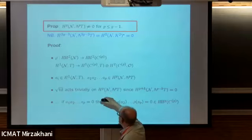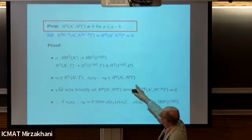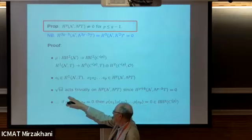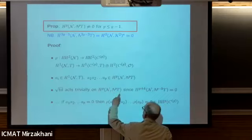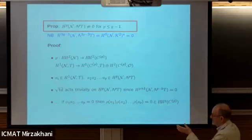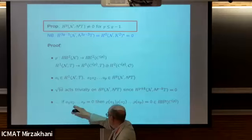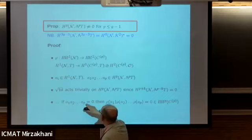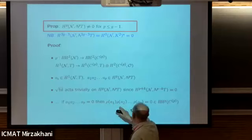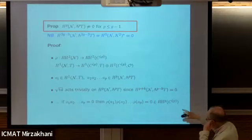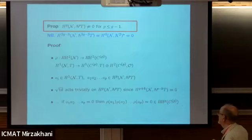Let me give a sketch of the argument. The idea is: we take p elements in here and take their product over here. This gives us H^p of ∧^p T. Now the square root of Todd acts to shift this because it raises one index and lowers another. The vanishing theorem tells us that part is zero. So actually the root-Todd acts trivially on this, and so this product - if this product is zero in the cohomology of N - then the corresponding terms in the Hochschild cohomology of C^{(p)} are equal to zero.